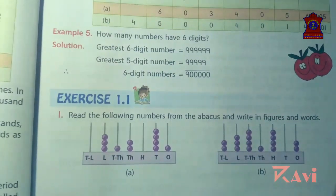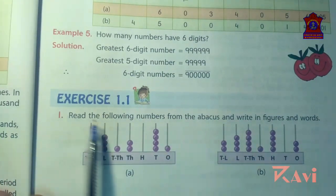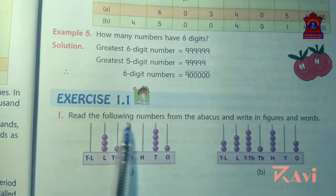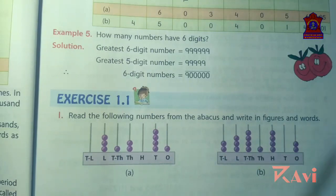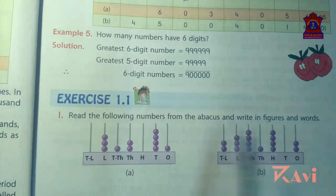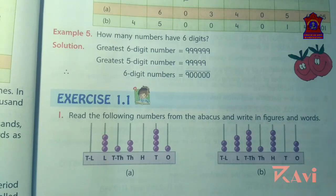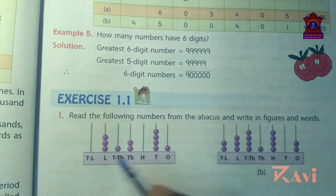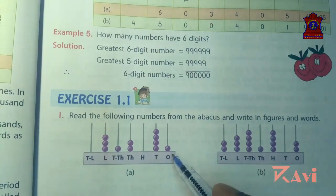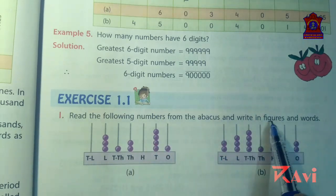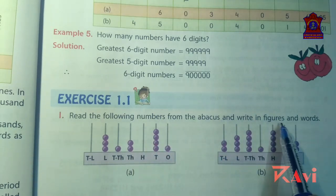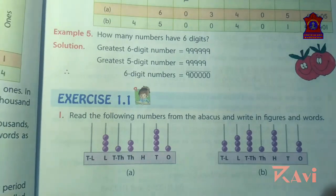Look at question number one. Read the following numbers from the abacus and write in figures and words. It's very simple to do. You need to count the number of beads, write the numbers, and with the help of this you have to write the number names also. So let's start.